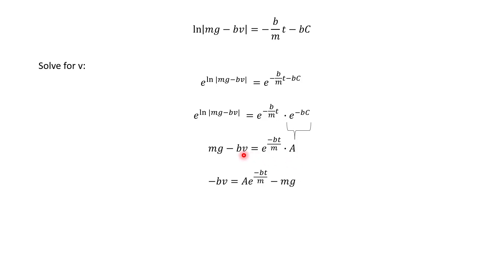Okay, a couple of steps remaining. Remember, we're trying to find v. So let's move over the mg by subtracting. And last step, we're going to divide out the negative b.